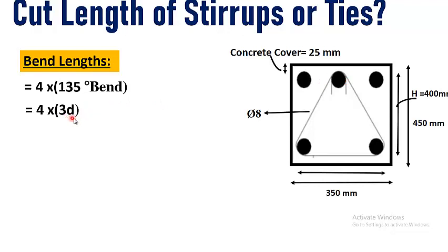4 number of 135 degree bend and the length of 135 degree bend is equal to 3 times of diameter of bar of a stirrup. So by calculating the value we will get 96 mm. So bend lengths are equal to 96 mm in this triangular stirrup.